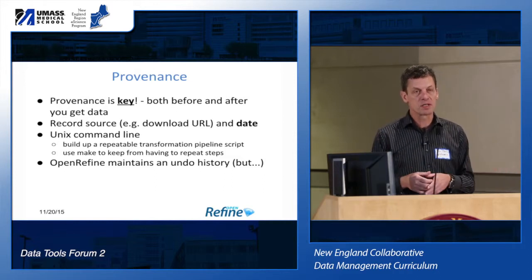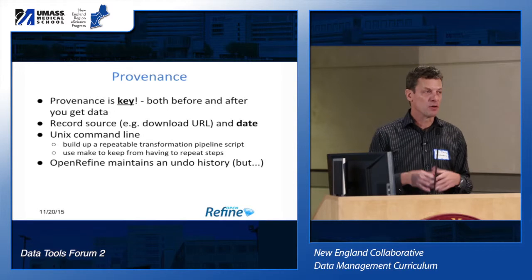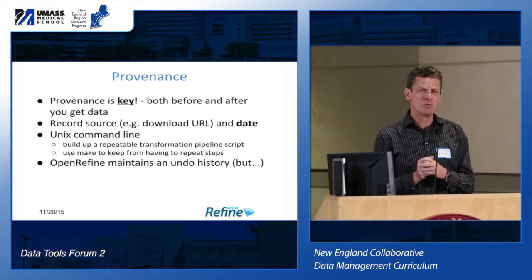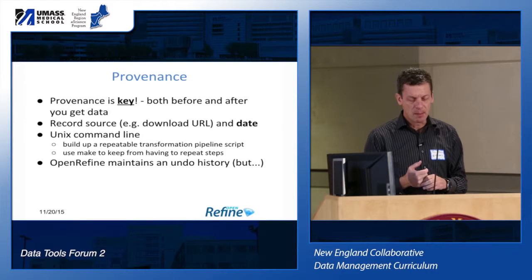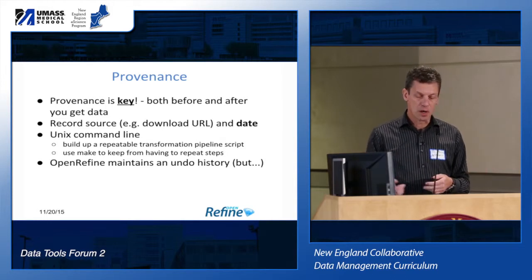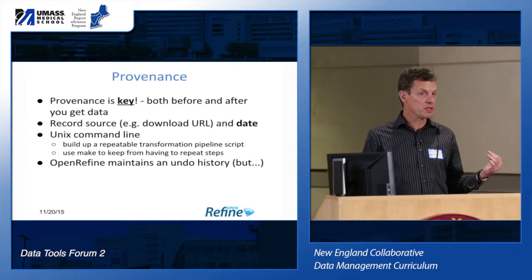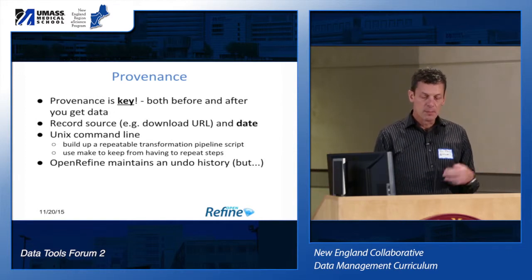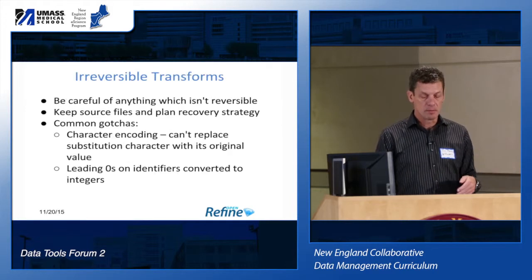Chris talked a little bit about provenance, so I'll just touch on that first. Provenance is super important. I don't know how many people have done a whole bunch of munging in Excel and then gone back six months later and said, 'What was that column anyway? How did I derive it? Where did I get that spreadsheet — was it on a network share?' So the first thing you want to do is record where you got the data, whether it be the URL you downloaded from, the file name, or the date. One of the nice things about OpenRefine is it has a complete undo history, so you can see the entire list of operations that you've done.